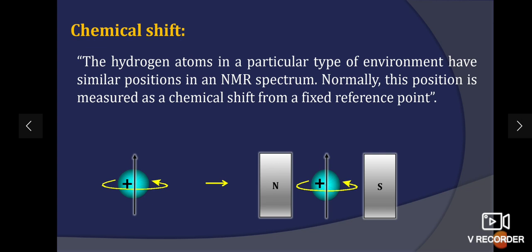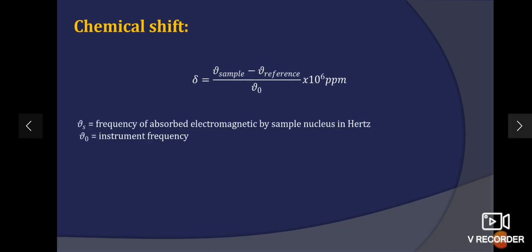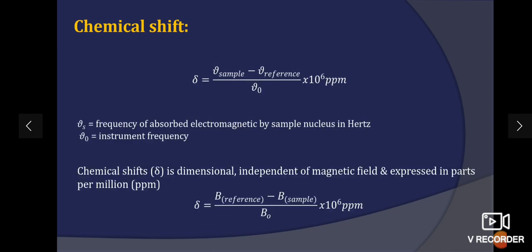This is the formula to calculate the chemical shift value. The chemical shift is dimensional and it is independent of magnetic field and should be expressed in terms of parts per million. The formula for chemical shift is δ equals nu sample minus nu reference divided by nu 0 into 10 power 6 ppm.